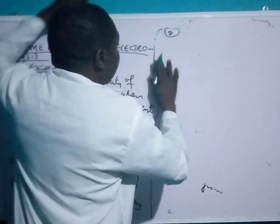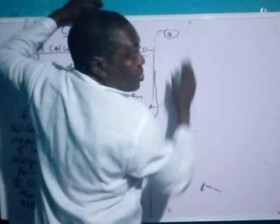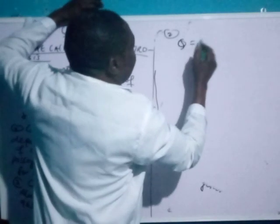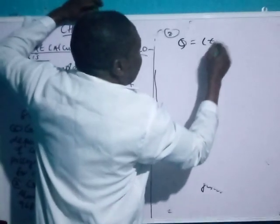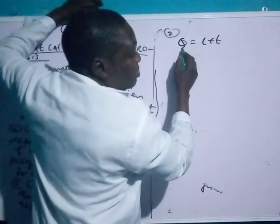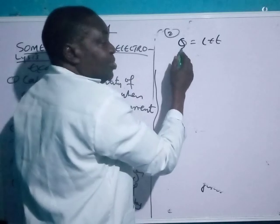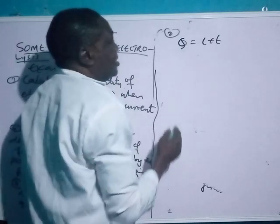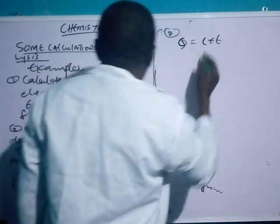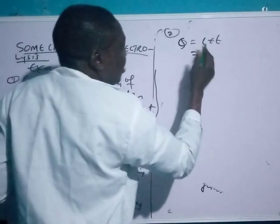The formula for calculating quantity of electricity is Q equals current times time, where Q is measured in Coulombs. Q is known as the quantity of electricity.